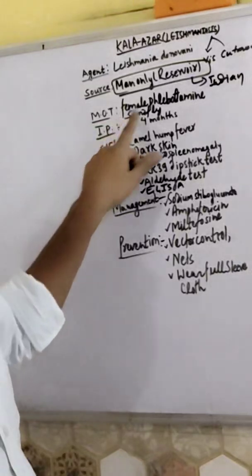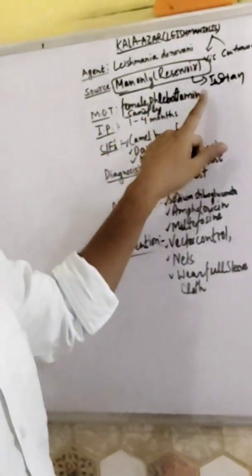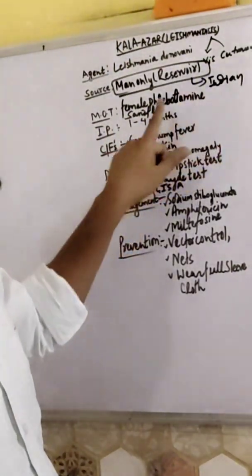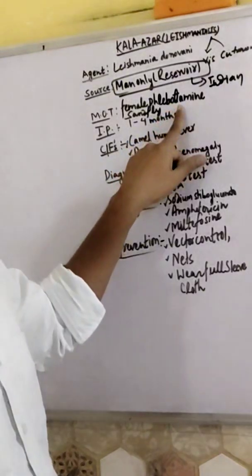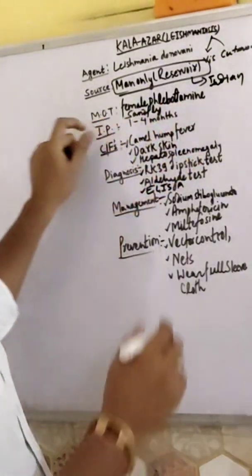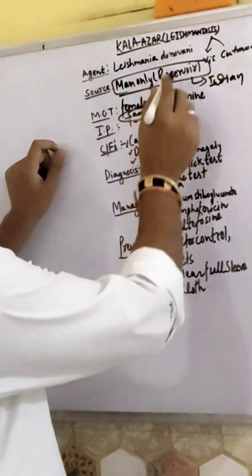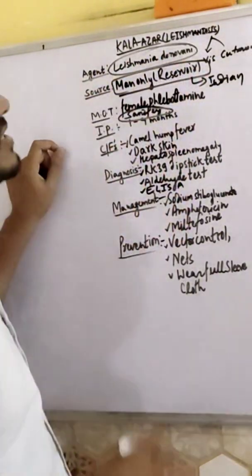Mode of transmission is through the female Phlebotomus sandfly. The sandfly is a vector, and Leishmania is the causative agent.